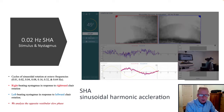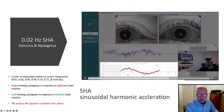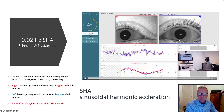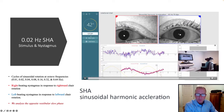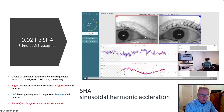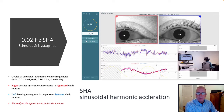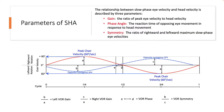During this testing, you'll generate an opposing sinusoid of the VOR eye response in relation to the chair response that can be analytically or objectively described. We use three parameters to describe this: VOR gain, phase, and symmetry.